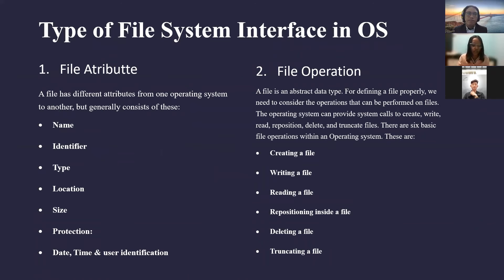Next, the types of file system interface in OS. First, we have file attributes. A file has different attributes from one operating system to another, but generally consists of the following: one, name; two, identifier; three, type; four, location; five, size; six, protection; and seven, date, time, and user identification.